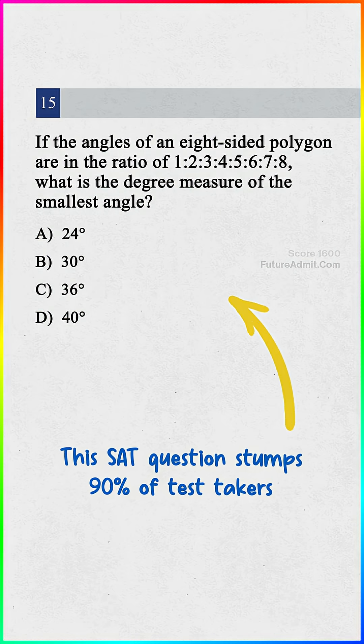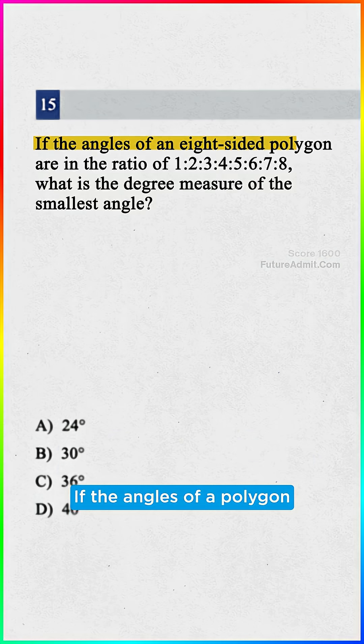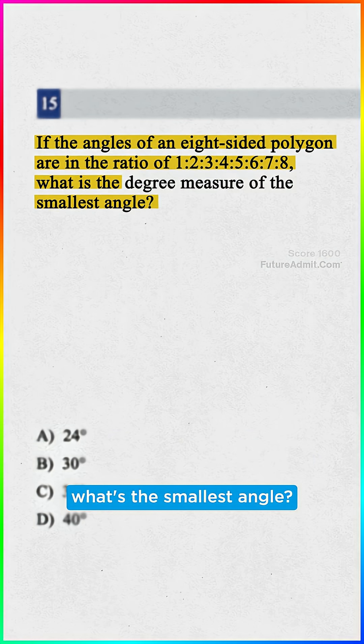This SAT question stumps 90% of test takers. If the angles of a polygon are in that ratio, what's the smallest angle?